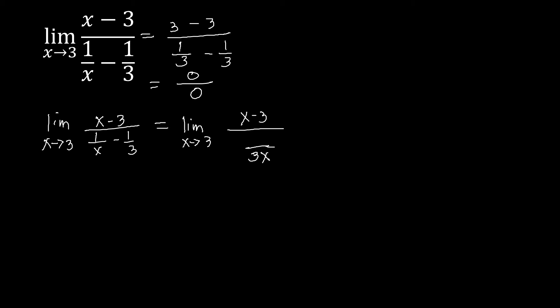We are going to get the numerator by having this LCD divided by the denominator. So 3x divided by x is 3, times 1, that is 3. And then we have minus: 3x divided by 3, the denominator of the second fraction, is x, times 1, that is also x. Now let's go to simplifying that one.